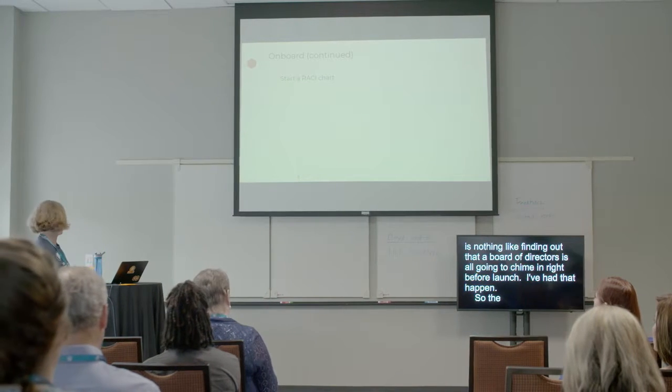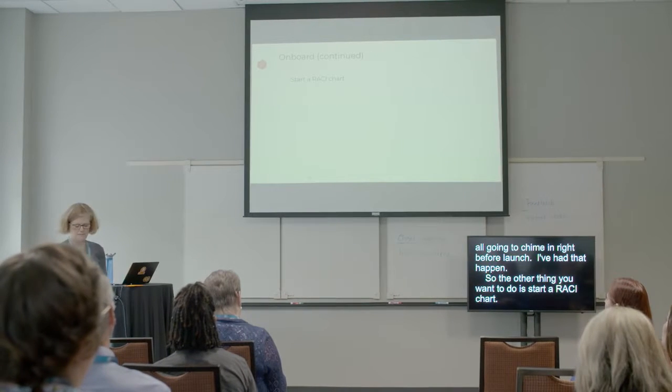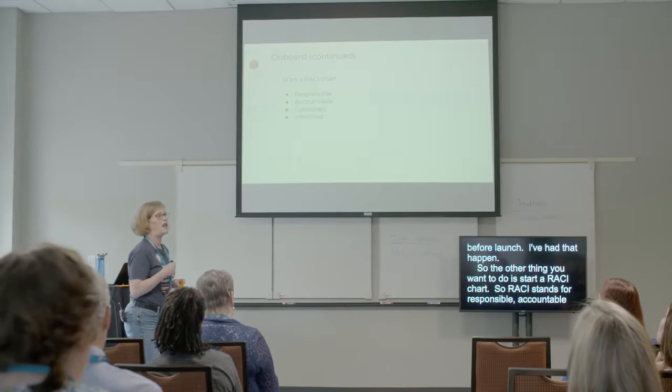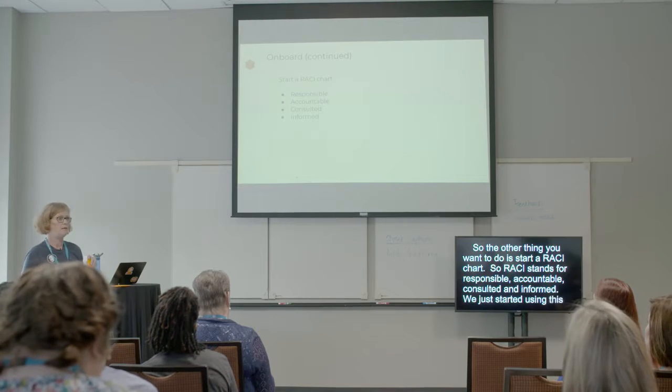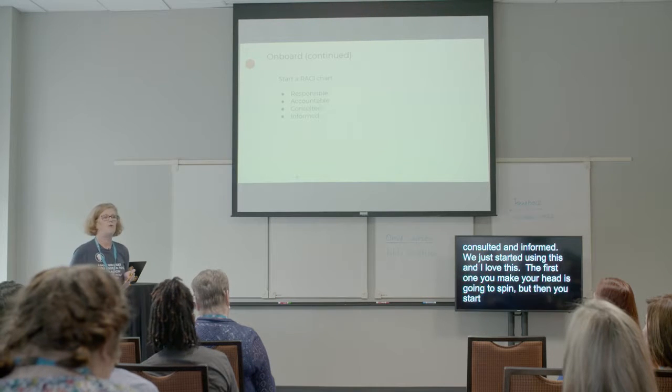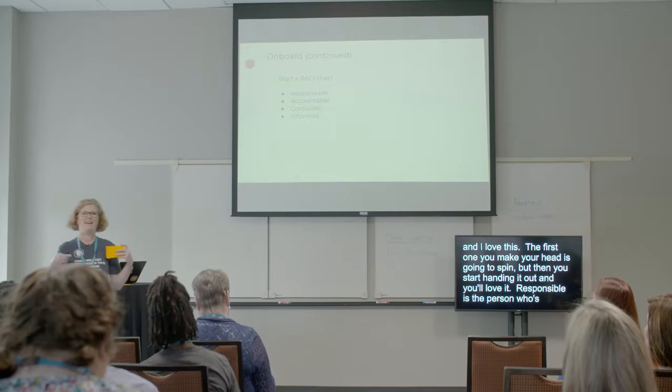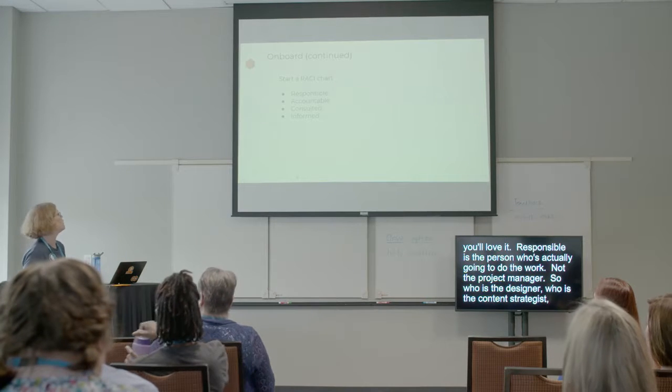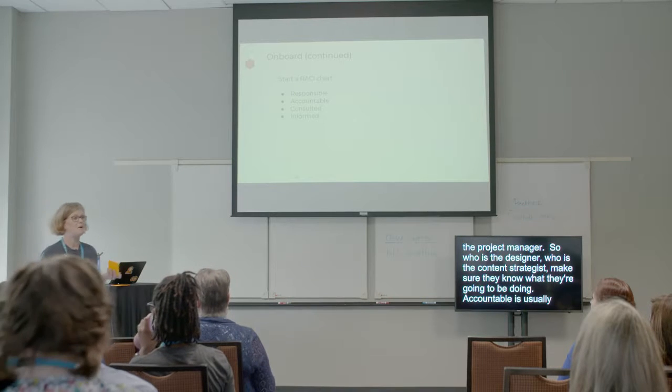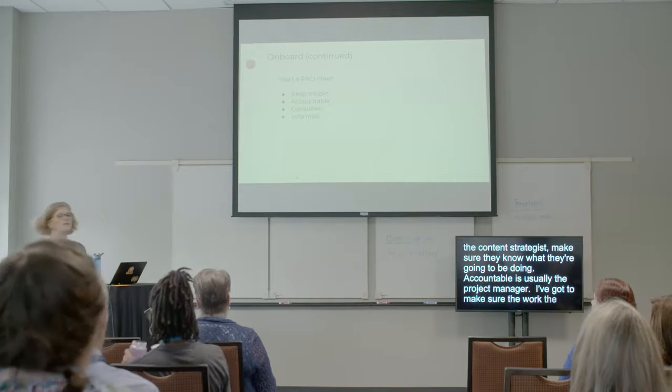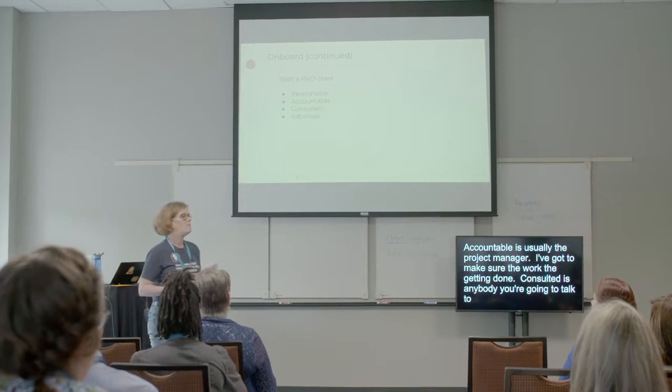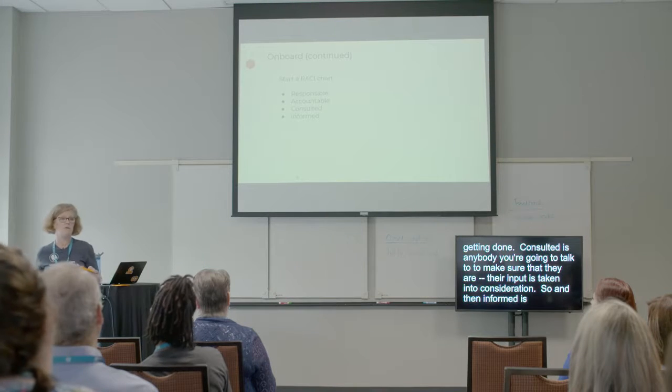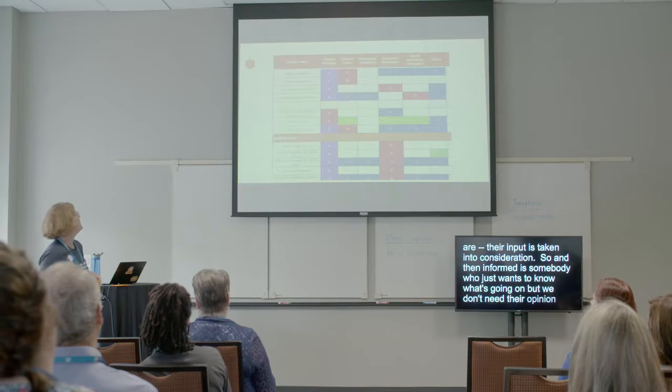The other thing you want to do is start a RACI chart. So RACI stands for responsible, accountable, consulted, and informed. We've really just started using this and I love this. The first one you make, your head's going to spin, but then you start handing it out and people love it. Responsible is the person who's actually going to do the work, not the project manager. So who is the designer? Who is the content strategist? Make sure that they know what they're going to be doing. Accountable is usually the project manager. I've got to make sure that work is getting done. Consulted is anybody you're going to talk to to make sure that their input is taken into consideration. And then informed is somebody who just wants to know what's going on, but we don't need their opinion.